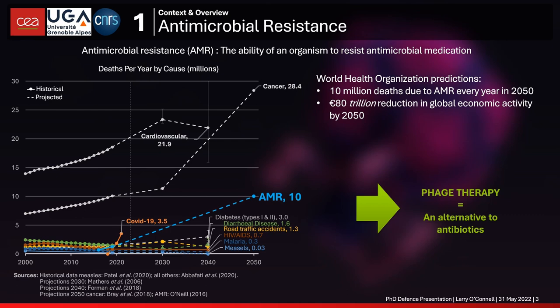AMR is a growing problem predicted to become one of the number one causes of death, with up to 10 million deaths per year by 2050. I've assembled some historical and projected death rate data to give an idea of how 10 million AMR deaths compares to other causes. It's probable that AMR will overtake diabetes type 1 and 2, diarrheal disease, road traffic accidents, and HIV/AIDS — overtaking all of these by 2050.